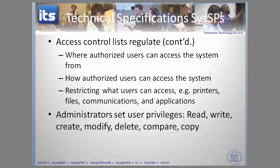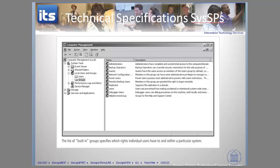Let me show you an example. In this case, we've gone into computer management, and you can see groups with rights associated with those specific groups. Administrators can do certain things, backup operators have permissions for certain other things, guests, network configurators, configuration group, power users — all have different permissions. If you go into your Windows operating system, it's easy to pull this up and see what permissions have been set. The underlying technology behind this is those access control lists.